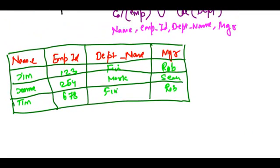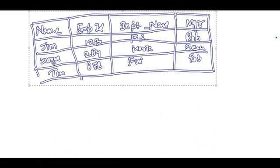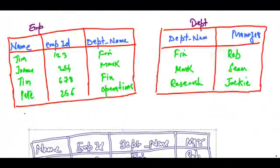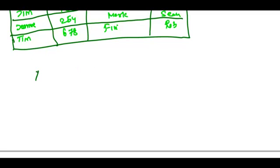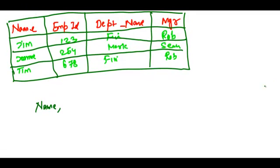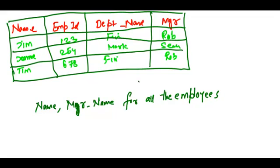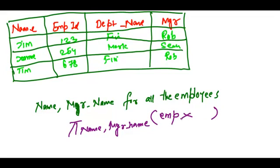Now, let's suppose we want to find out the name and the manager's name for all the employees. How would I do that? It's very simple. I would simply say project name, manager name from the natural join of employee and department. That's one way to do it.